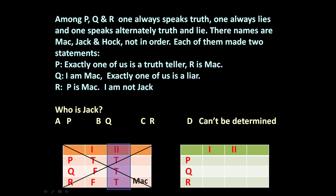Let us prepare another table with the same configuration — P, Q, R, statement one, statement two. This time let us assume Q made two true statements. Q says: I am Mac — so Q is Mac. Exactly one of us is a liar — this is true, since only one of them is a liar. Now R says: P is Mac — but we know Q is Mac, so this is false. P says: exactly one of us is a truth teller — true. R is Mac — false, because Q is Mac.